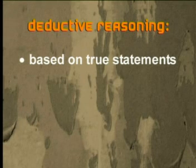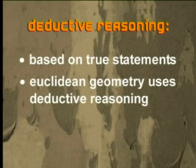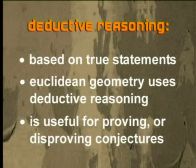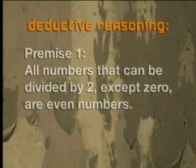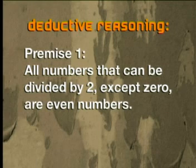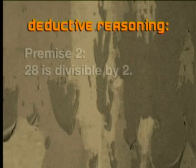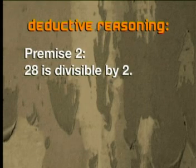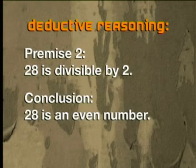This form of reasoning is called deductive reasoning. It is based on true statements that we call premises. Euclidean geometry uses deductive reasoning — as long as the premises are true, the conclusions are always valid. Is 28 an even number? Of course it is. You used deductive reasoning. Our first premise: all numbers that can be divided by 2, except 0, are even numbers. Our next premise: 28 can be divided by 2. Therefore, the conclusion is that 28 is an even number.